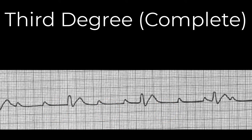And finally, if the P waves march across the strip regularly and so do the QRS complexes, but there is no apparent connection between the two, this is a third-degree block. In this case, no impulse is getting through the AV node at all, so the ventricular rhythm is being generated in the junction, the bundle of His, or the ventricles. That is why the QRS in a third-degree block is usually wide and at a slow rate — the lower the point of origin, the wider, uglier, and slower the ventricular rate will be.